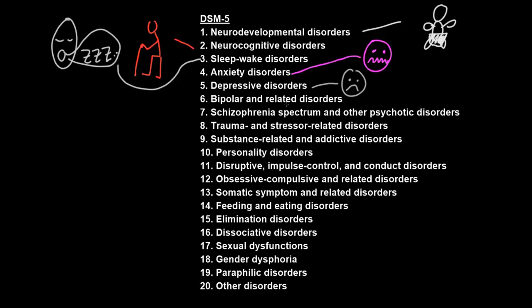Bipolar and related disorders involve distress or disability from abnormal mood, similar to the depressive disorders, but the difference is that these disorders may have periods of abnormally positive mood, which are called mania. During periods of mania, people will often sleep little, talk fast, and may make bad decisions from impaired judgment about the risks of activities or their own abilities, and this can lead to all sorts of social or legal problems.